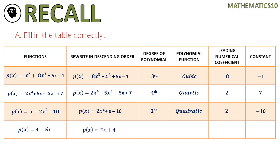For the last item, we have P of x equals 5x plus 4. I would like you to remember how to read this — it should be read as 'P of x equals 5x plus 4.' The highest degree or highest exponent is 1 only, so the degree of the polynomial is 1st. Since it's a 1st degree polynomial, it is called a linear function. The leading numerical coefficient is 5, and the constant is positive 4.